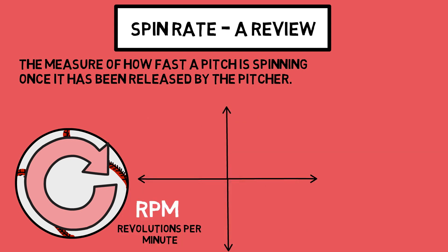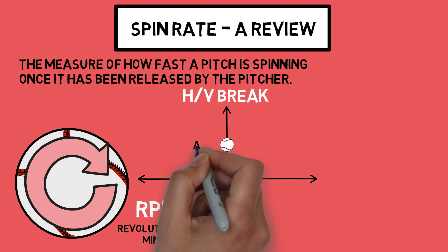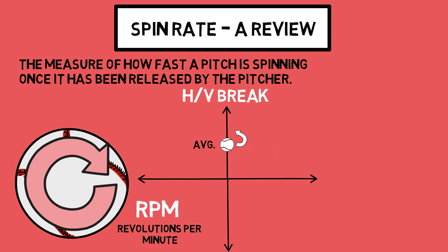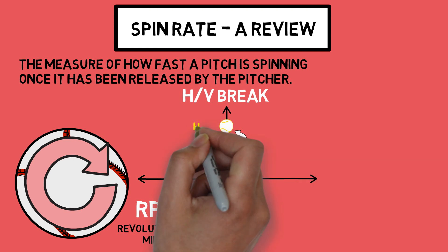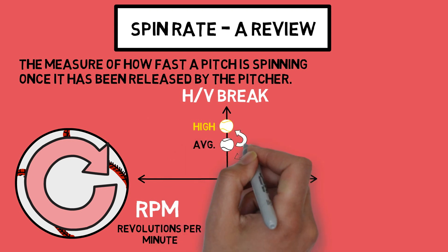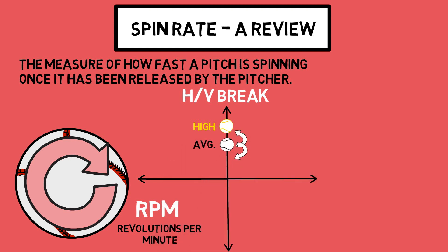This is a horizontal and vertical break chart that describes the movement a pitcher puts on the ball. For an average spin rate fastball, that pitch shows up about right here on our chart. If we throw that exact same pitch but the only metric that changes is a higher spin rate, our pitch would now show up higher on the chart, meaning the pitch would drop less than our average pitch. And just the opposite would happen with a lower spin rate.